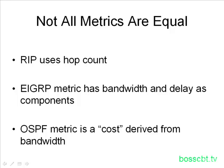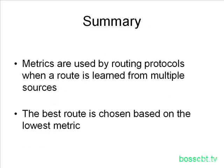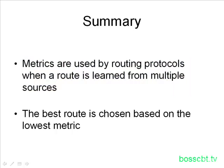The point to take away is that when you're using a routing protocol, you need to be aware of what the metric is based on and how it's used, because it's very different between each of these three protocols — and BGP is yet different again from all three. To summarize: metrics are used by routing protocols when a route is learned from multiple sources and the routing protocol has to choose the best route. Generally speaking, the best route is chosen based on the lowest metric.